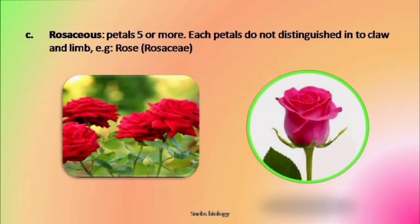The serrated margins are there, the number of petals is five, and in cruciform the margin is smooth and the number of petals is four. The third is known as rosaceous — rosaceous corolla is found in rose family members. Here the number of petals is in multiples of five and every petal has a narrow base widening towards the top. This type of corolla is called rosaceous.